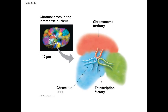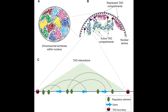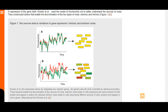Gene expression is also influenced by the nuclear architecture, or how the DNA is organized within the nucleus. Studies have shown that loops of DNA from different chromosomes often aggregate to sites where high rates of transcription take place, which are often called transcription factories or hubs. These most often occur in the center, whereas genes that aren't expressed are often located on the edges of the nucleus.